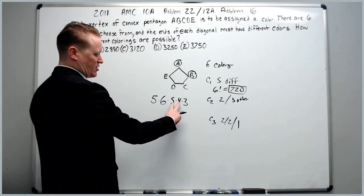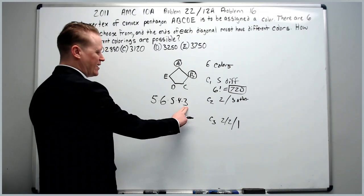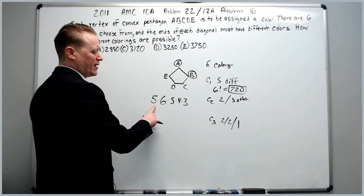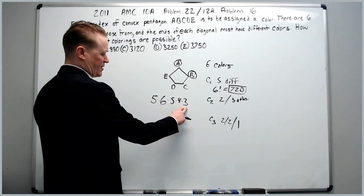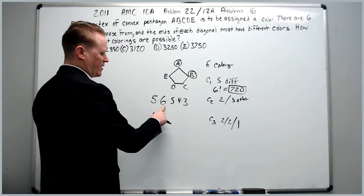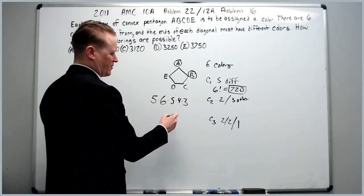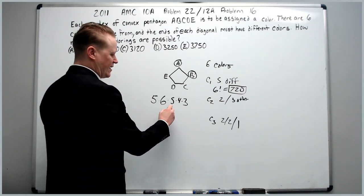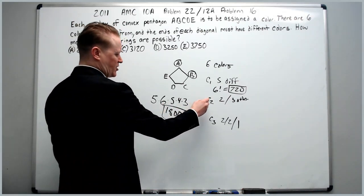And the order does matter because they have names, they're specific points. So here you get 20 times three is 60, times five is 300. 20 times three, 60 times five, 300 times six is 1800. Okay. So that's case two.